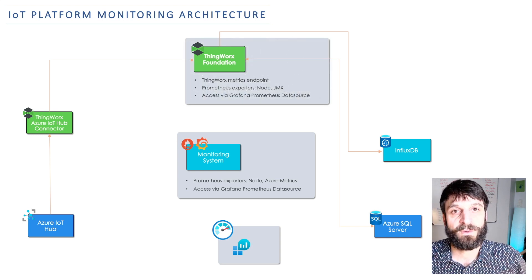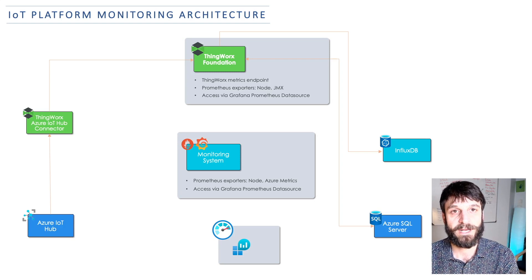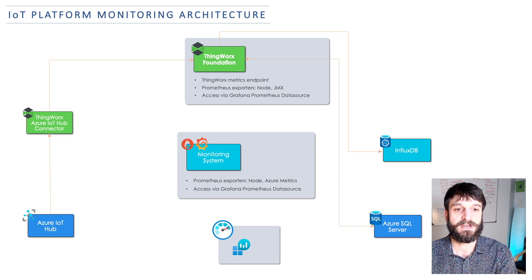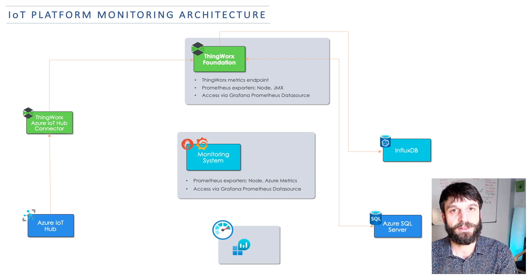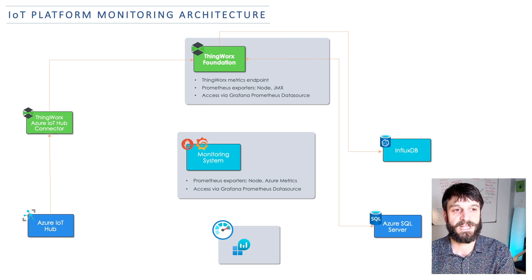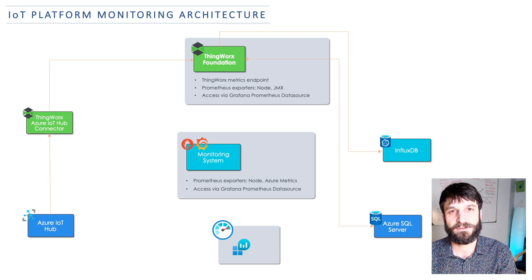To get things off ThingWorx Foundation, the first thing is the metrics endpoint. In ThingWorx 9.0 when we brought out Active-Active, we added the slash ThingWorx slash metrics endpoint, which provides Prometheus-format metrics. I also have Prometheus exporters as other providers of metrics on the system: the node exporter gets VM details like CPU, memory, and disk space, and the JMX exporter connects as a Java agent into the JVM to get all relevant metrics from the Java virtual machine.